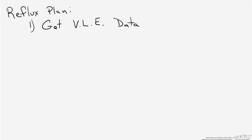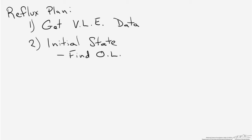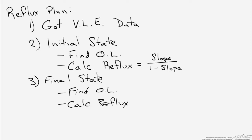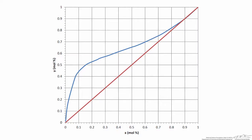Now we arrive at the second part of the problem: determining how we adjust our reflux to account for the changing reboiler composition. Since this is a distillation operation, we first look for the vapor-liquid equilibrium data for the system — I've pulled this for the ethanol-water system from Perry's. We're going to consider what's happening both at the beginning and the end of the distillation operation, finding an operating line and calculating the reflux ratio for each state.